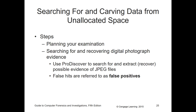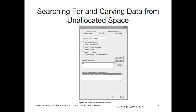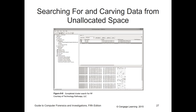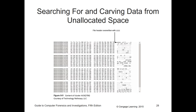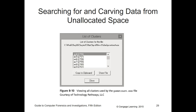Searching for data in unallocated space is about planning your examination — this takes time. You can use ProDiscovery to search for items, but you have to be careful of false positives. We can do clustered searching with a designated save location. Here's ProDiscovery pulling out data with hex values, and here is the file header overwritten with Zs so you can compare them. Here's a list of clusters.